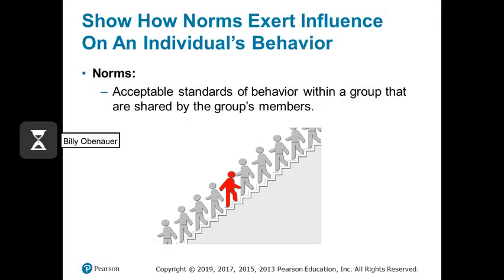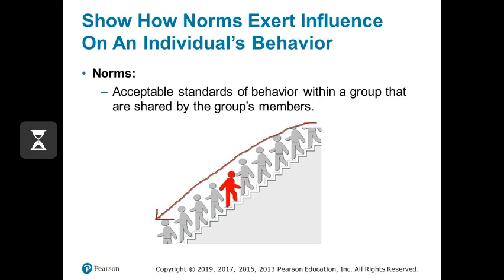Related to our roles within groups, we have norms — the acceptable standards of behavior within a group that are shared by its members. It's basically how we expect all people to behave in a situation. As shown here, the norm is to go down the stairs, but one person is violating the norm and going up the stairs.